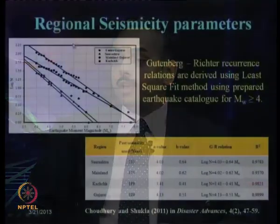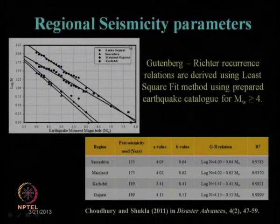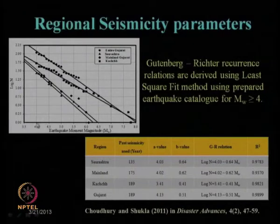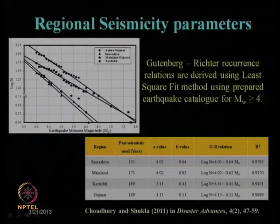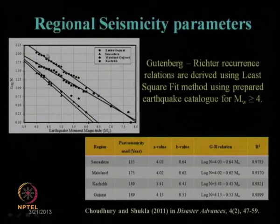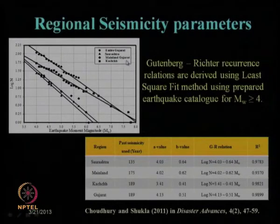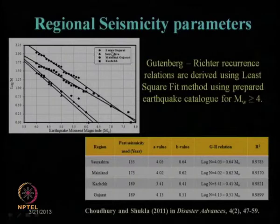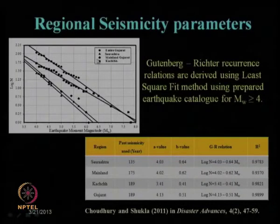The next step is to check the regional seismicity parameters. We have earthquake moment magnitude MW, taking values of MW ≥ 4. The log of N — number of occurrences at a given magnitude — is plotted for the three regions: Kach, Saurashtra, and mainland Gujarat, and also for entire Gujarat by summing them. We want to see the Gutenberg-Richter parameter variation for individual regions compared to the entire Gujarat region.